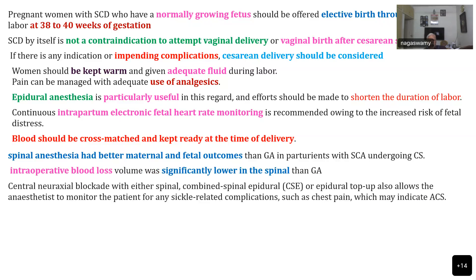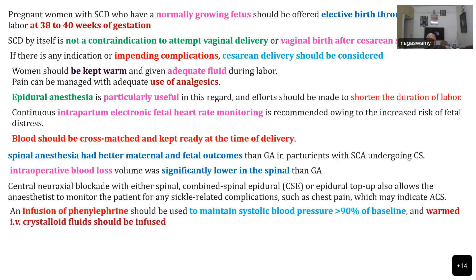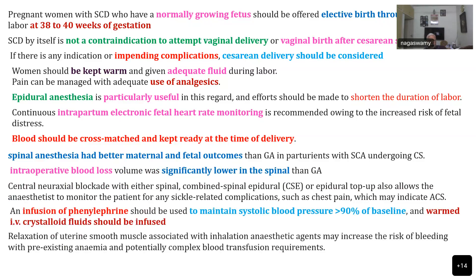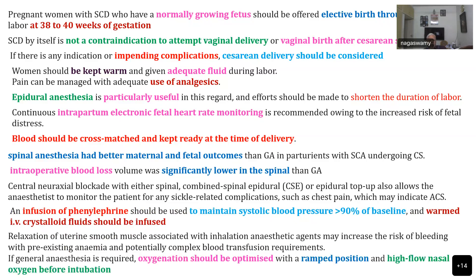Spinal anaesthesia has better maternal and fetal outcomes compared to general anaesthesia, and intraoperative blood loss is significantly lower with spinal. Central neuraxial blockade — if it is not a category 1 caesarean section and you have time — a combined spinal or epidural can also be performed. Monitor the patient for any sickle-related complications like chest pain, which can indicate ACS, similar to monitoring for acute coronary syndrome. You can keep the patient conscious to diagnose ACS very fast. Infusion of phenylephrine should be used to maintain systolic pressure more than 90% of baseline, and warmed crystalloid fluids must be used.